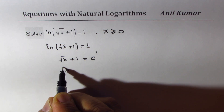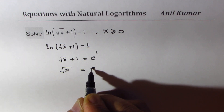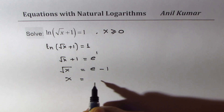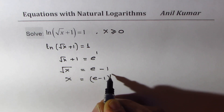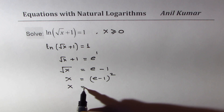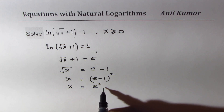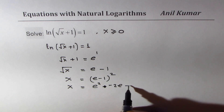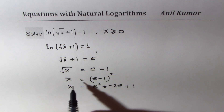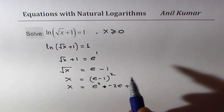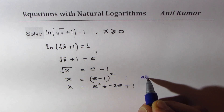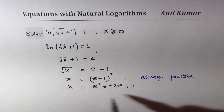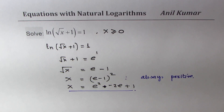We rearrange to write square root of x as equal to e minus 1. We want to know what x is, so x is the square of this: (e minus 1) whole squared. That gives the answer e squared minus 2e plus 1. Since this is a square, x is always positive. So that becomes the solution of our first equation.